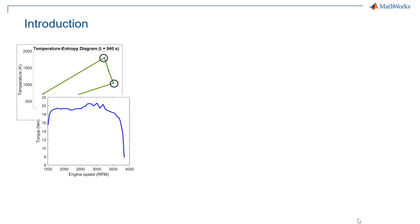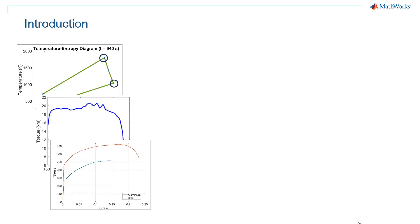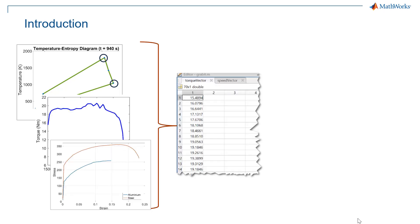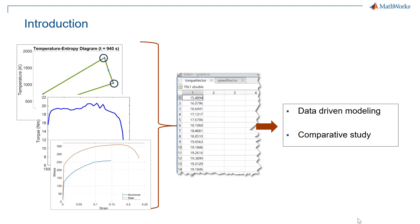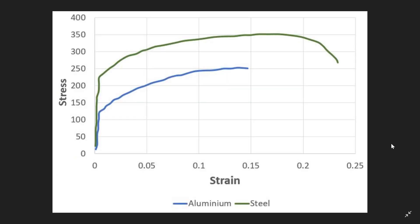You often come across charts in image form from which you need to extract data points, either for data-driven modeling or comparative study. For example, this is an image file which shows the stress-strain curve of aluminium and steel. From here you need to extract data points so that you can do some further analysis.